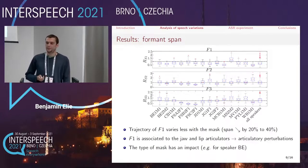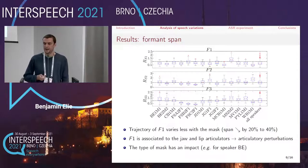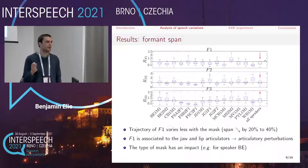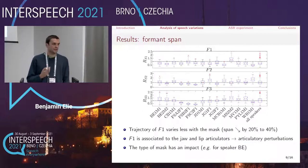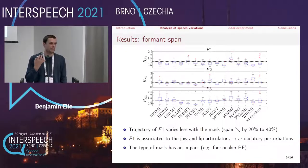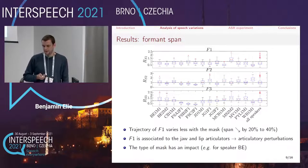For the formant span, there is a significant impact on the span of F1, where almost all speakers tend to significantly decrease the value of the F1 span. Overall, across all speakers, we have a decrease of about 30%. This is interesting because F1 is commonly related to the jaw and lip articulators, suggesting that the mask perturbs these articulators and makes the jaw and lips less active than without the mask, resulting in a flatter F1 trajectory. There is no significant effect for the F2 and F3 span.